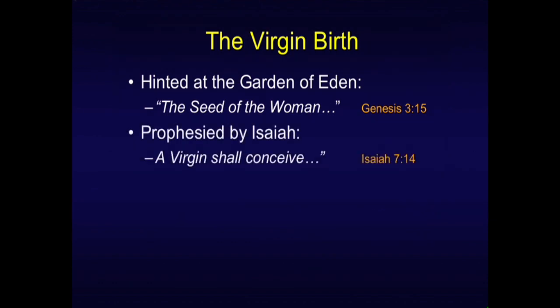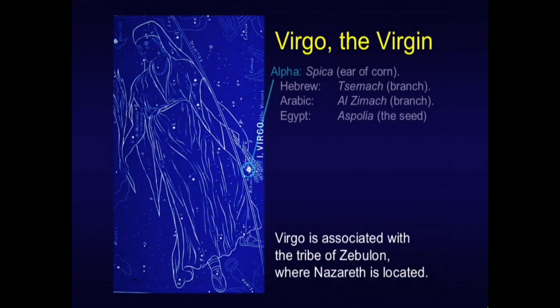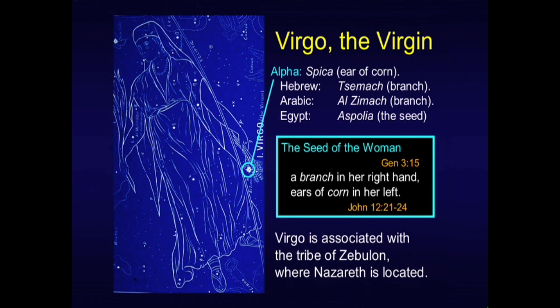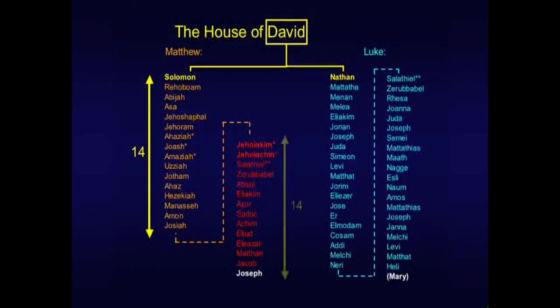The virgin birth was hinted at the Garden of Eden, prophesied by Isaiah — 'the virgin shall conceive' — and required by the blood curse in the royal line. We talked about the interesting observations in the constellation of Virgo, the virgin, and how it echoes the seed of the woman with a branch in one hand and ears of corn in the other. Virgo is associated with the tribe of Zebulun, where Nazareth is located. Regarding the fourteen generations: three were omitted — blotted out as the Torah requires — because they died violent deaths due to their idolatry. When something doesn't quite compute at first, if you peek behind it, you'll make a discovery that will blow you away.